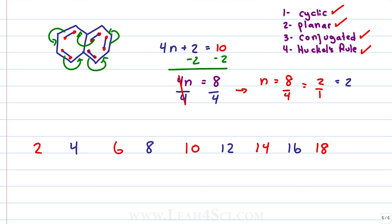Don't take my word for it, prove it to yourself by solving 4n plus 2 equals all of these numbers. This specifically refers to the number of electrons.